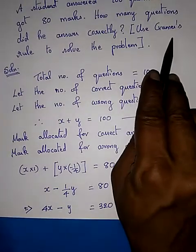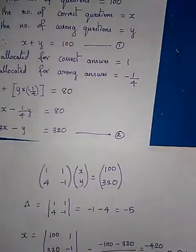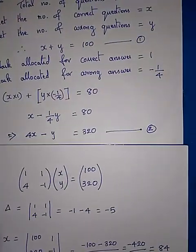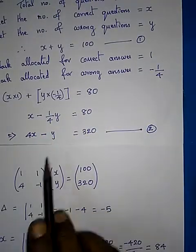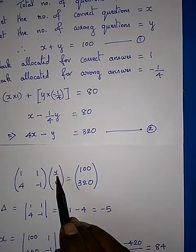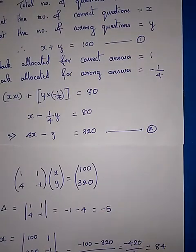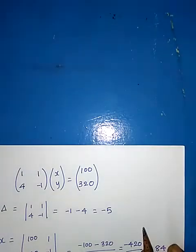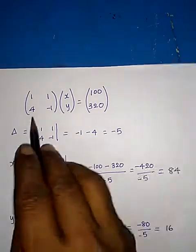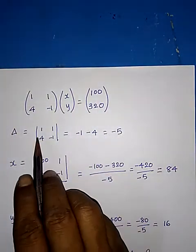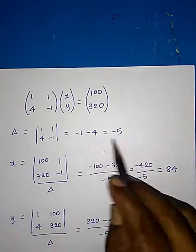We are going to solve this using Cramer's rule. First, write the coefficient matrix: [1, 1; 4, −1], with column matrix [X; Y] and right-hand side [100; 320]. The first step is to find the determinant Δ of the coefficient matrix: 1 into −1 minus 4 into 1 equals −1 − 4 = −5.